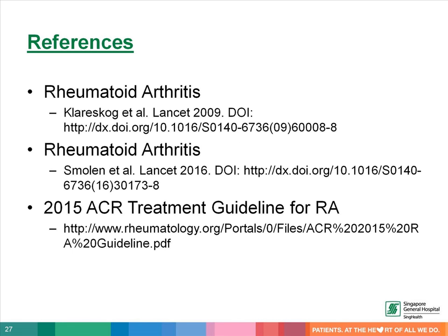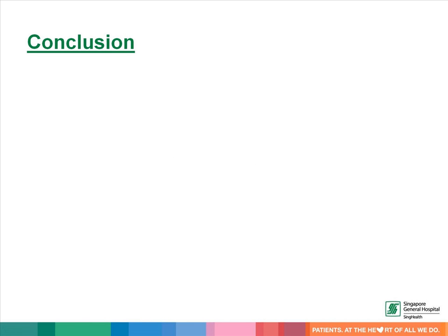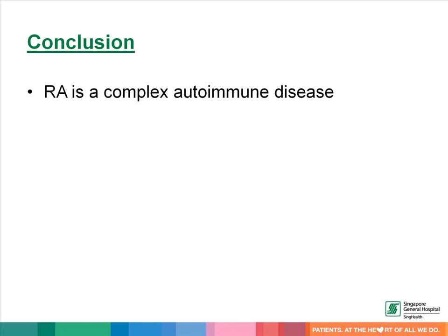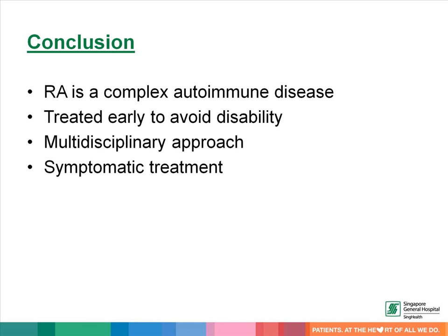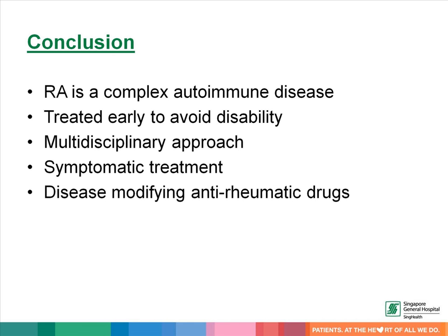To read more about rheumatoid arthritis, I recommend these articles written by experts in the field. In conclusion, rheumatoid arthritis is a complex autoimmune disease. We should treat rheumatoid arthritis early to avoid disability. The management is multidisciplinary. Drug treatment can be broadly divided into symptomatic control and more long-term treatment using disease-modifying anti-rheumatic drugs.